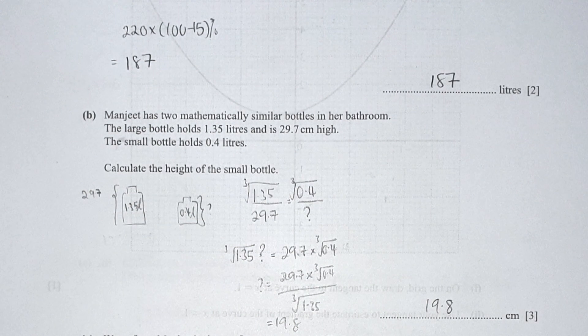For part b, it is a mathematically similar question. For volumes you are required to cube root them, and for the height you just leave it as is. So I compare: cube root of 1.35 over 29.7 equals cube root of 0.4 over the unknown. The unknown gives the result of 19.8 after calculation.